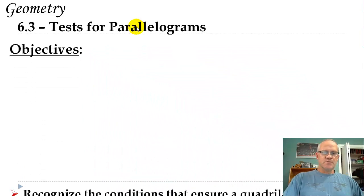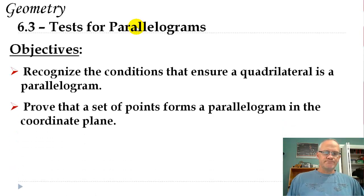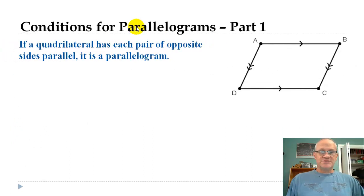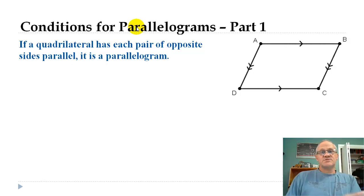What are we going to talk about today? We're going to talk about parallelograms. Our objectives are: we're going to recognize the conditions that ensure a quadrilateral is a parallelogram, and prove that a set of points forms a parallelogram in the coordinate plane. This is going to be very similar to what we talked about in the last section — just coming at it from the opposite way. Instead of saying you've got a parallelogram, what does x have to equal, now we're going to say: can this be a parallelogram, or what would x have to be?